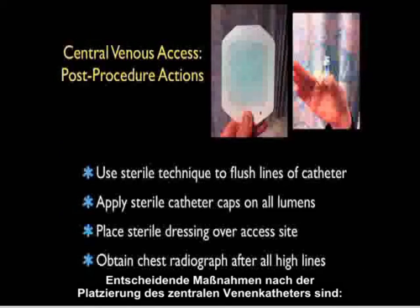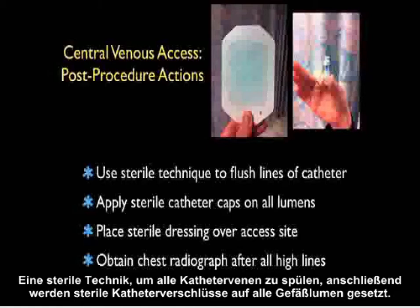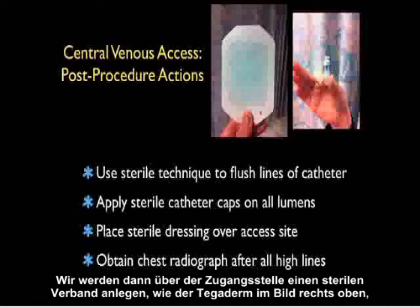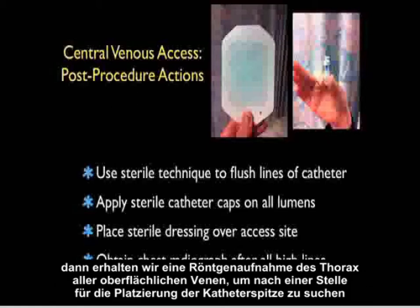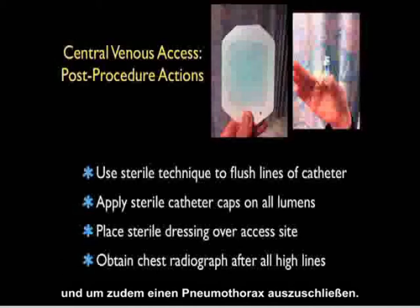Critical actions following placement include using sterile technique to flush all lines and placing sterile catheter caps on all lumens. A sterile dressing such as a Tegaderm is placed over the access site, and a chest radiograph is obtained after all high-line placements to confirm catheter tip position and rule out pneumothorax.